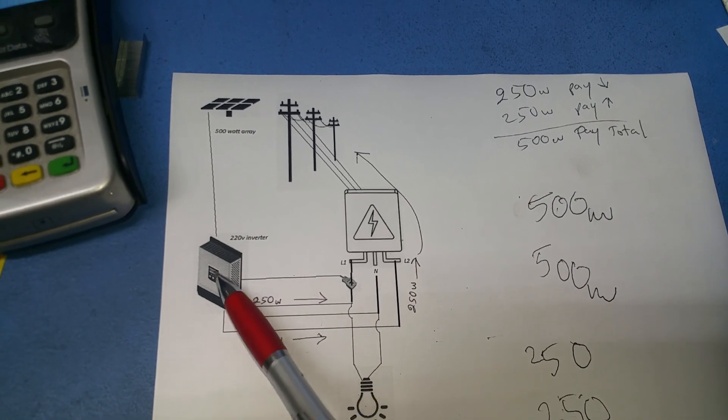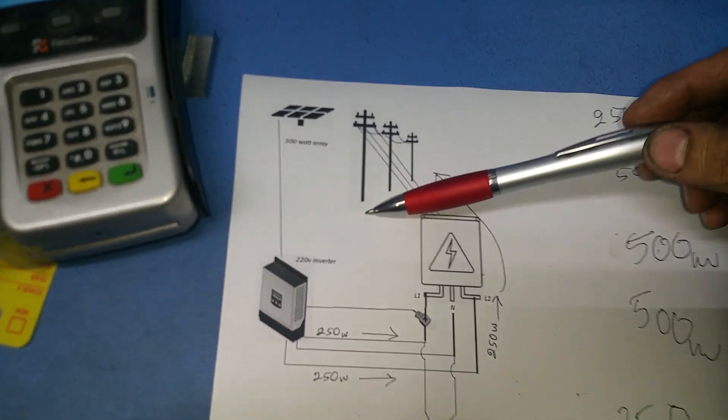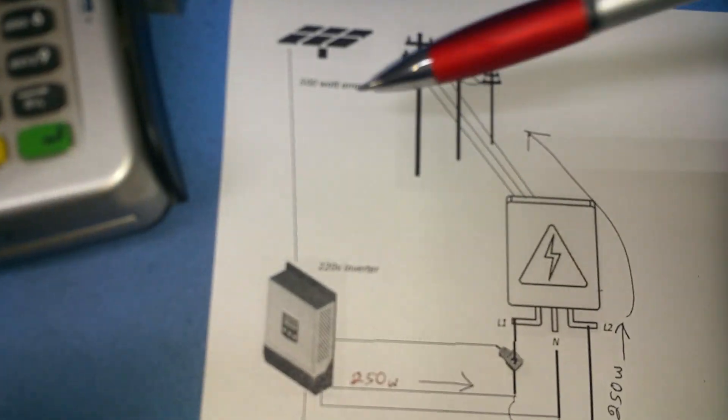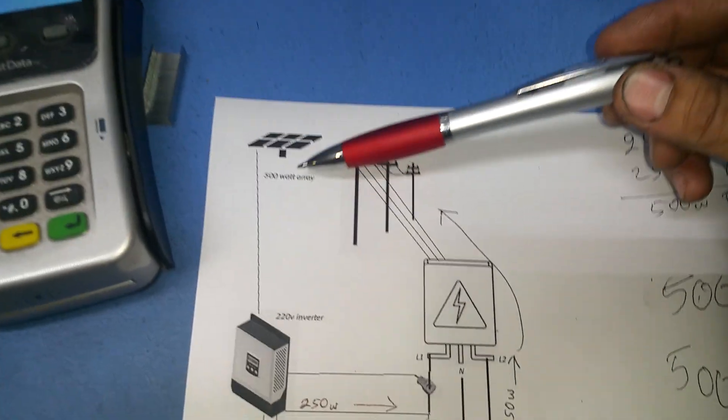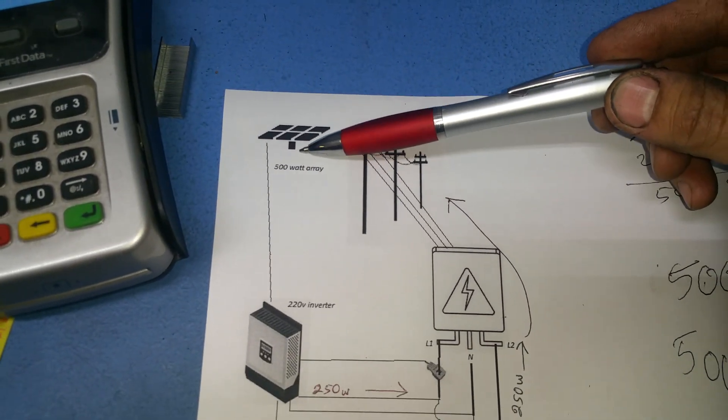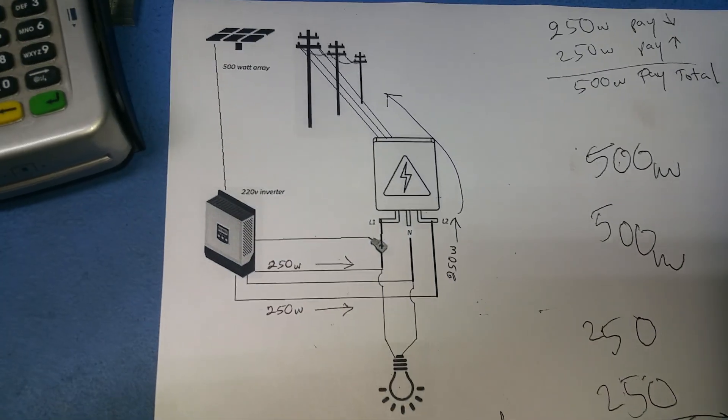This is going to be based on a 220 volt inverter. Let's say I have a solar array system that is 500 watts and I happen to have a load that is 500 watts.